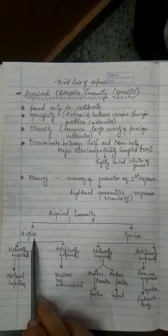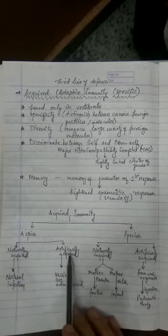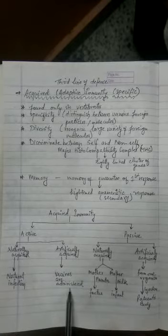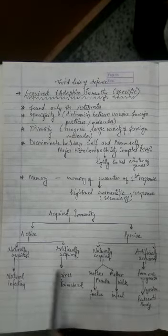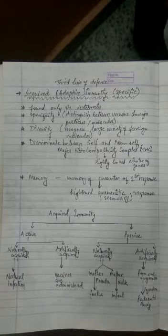So when active immunity a person develops but it is because of artificially developed, so it is called as vaccines are administered to the body. So there are two methods, and in both methods the person's immune system fights to develop immunity.